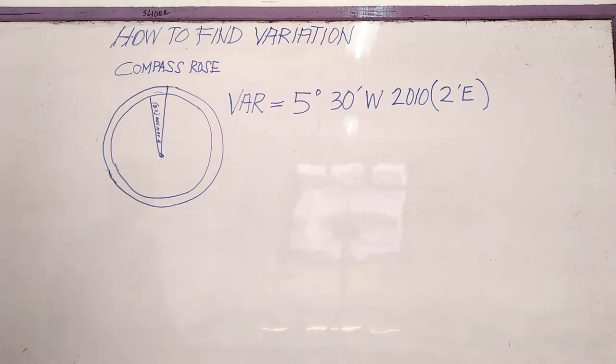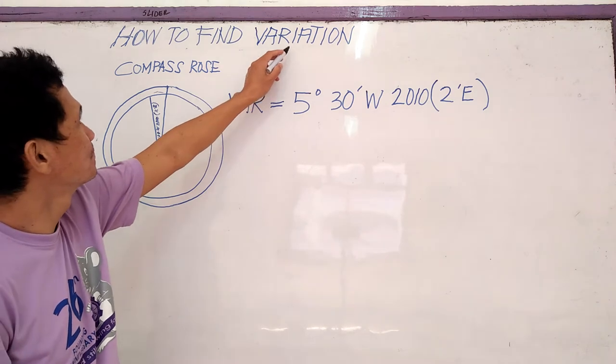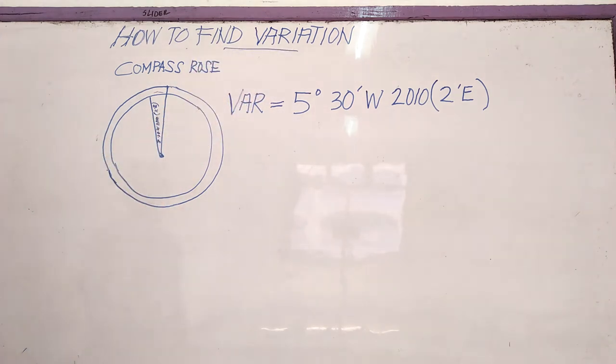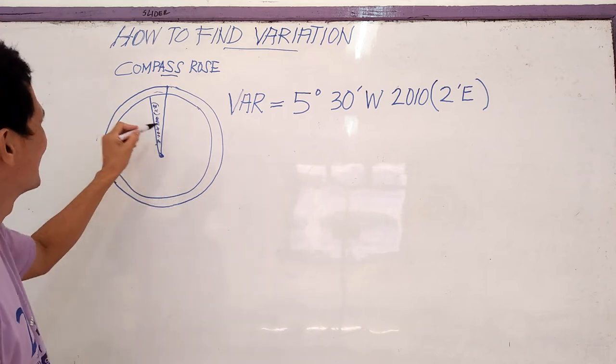Our topic is how to find variation on the chart. We can see this compass rose. In the compass rose we can take it here, so it is very small, so we will make it in lines.